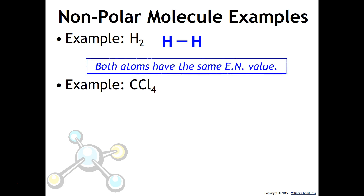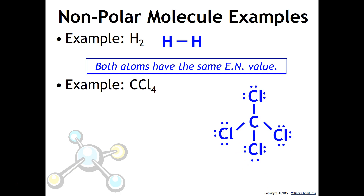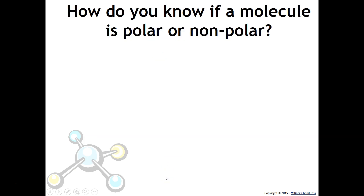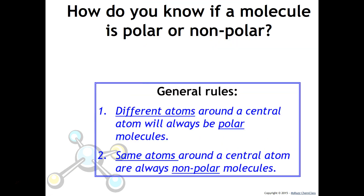In carbon tetrachloride, CCl4, each chlorine has the same attraction for electrons, so that is also considered nonpolar. Another way to look at it: if all atoms surrounding the central atom are the same, then the electrons are shared equally, and that is what makes a nonpolar molecule.